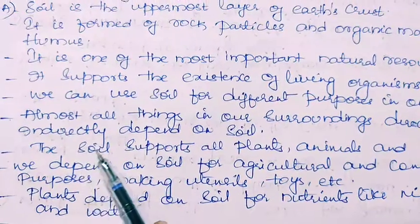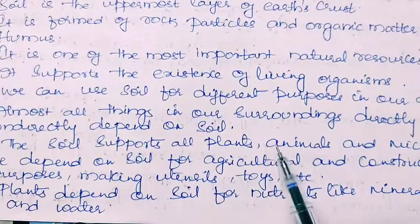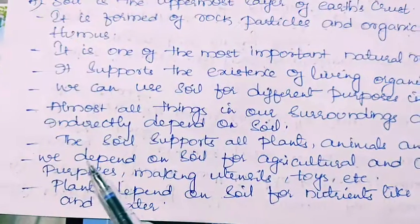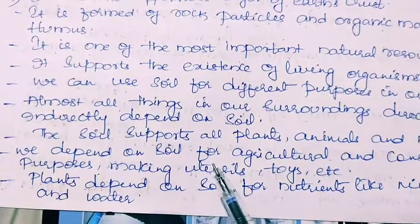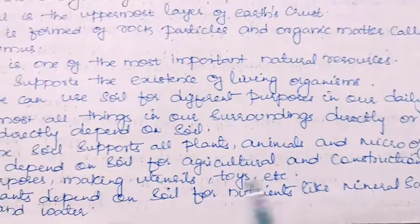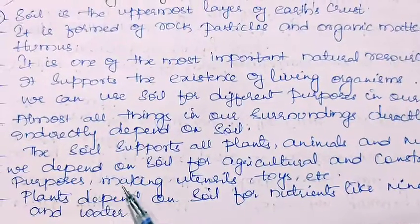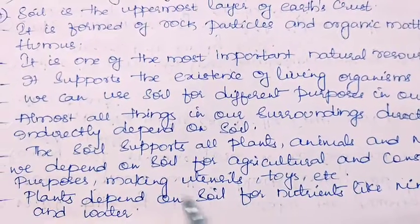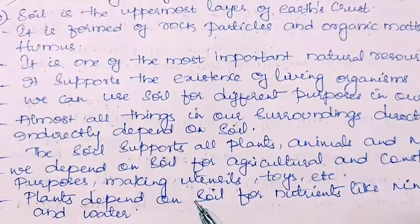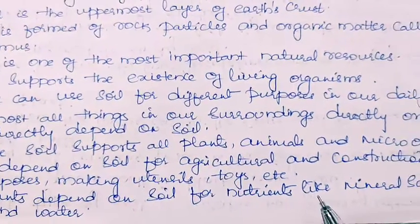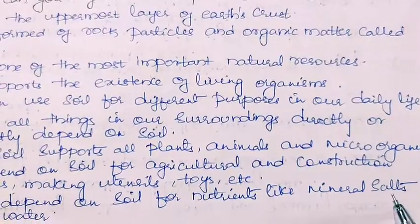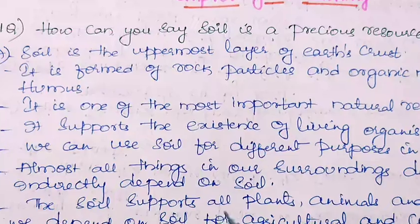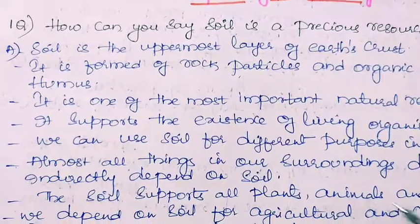Soil supports all plants, animals and microorganisms. We depend on soil for agricultural and construction purposes, making utensils, toys, etc. Plants depend on soil for nutrients like mineral salts and water. In this way we can explain how soil is called a precious resource.